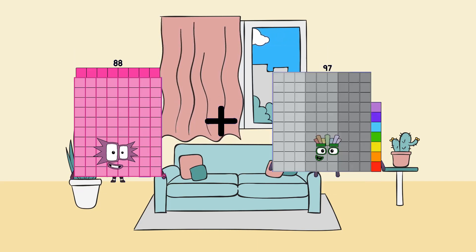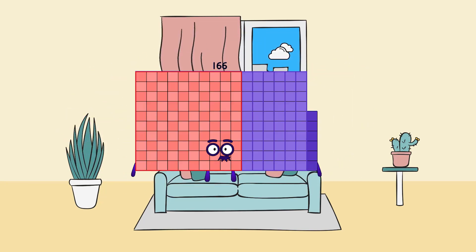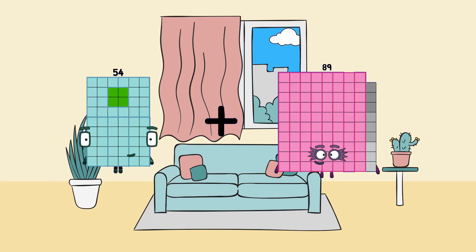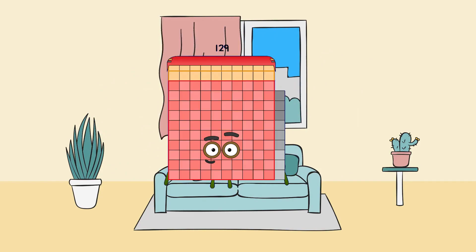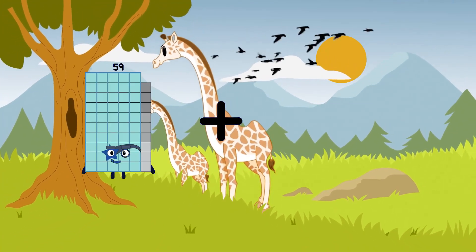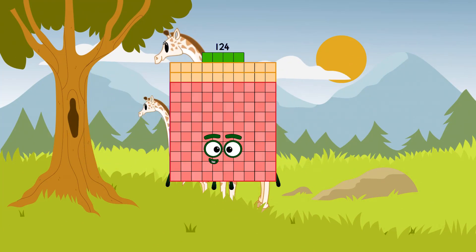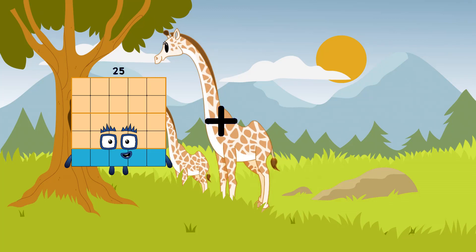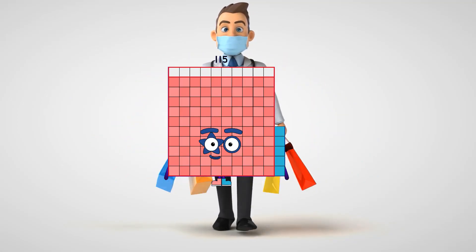88 plus 78 equals 166. 54 plus 75 equals 129. 59 plus 65 equals 124. 25 plus 90 equals 115.